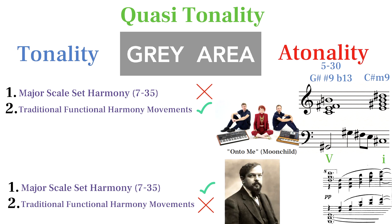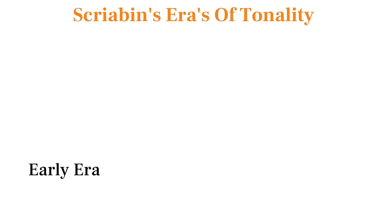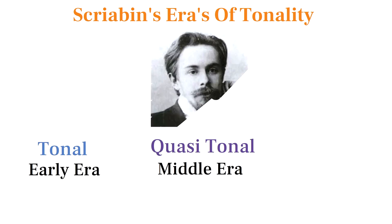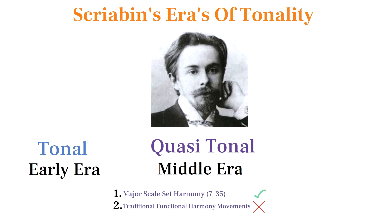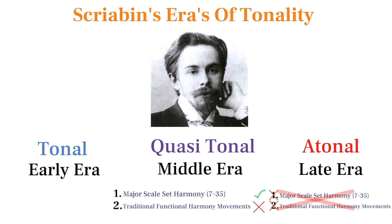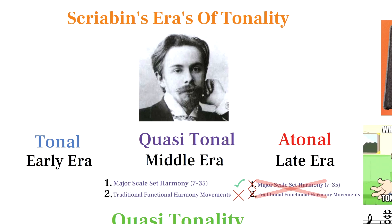Debussy has pieces that exclusively use sets from the major scale but utilize them in a completely non-functional way. Roughly speaking, Scriabin's early era was tonal. His middle era was quasi-tonal because in most of those pieces he evades traditional functions of harmony, and his late era is atonal because the harmony is completely outside the major scale and doesn't move according to traditional customs.